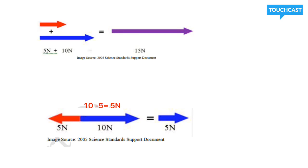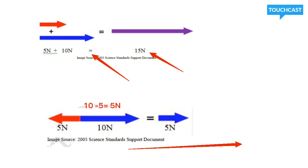If the unbalanced forces are pushing in the same direction, you add them together. In the top picture, the two forces are pushing in the same direction, so you would add the five newtons with the ten newtons, giving you a net force of fifteen. However, if you are pushing against each other, like in the bottom picture, you would take the ten newtons, subtract by the five, and your net force would be five newtons in the direction of the stronger force, so the object would move towards the right.